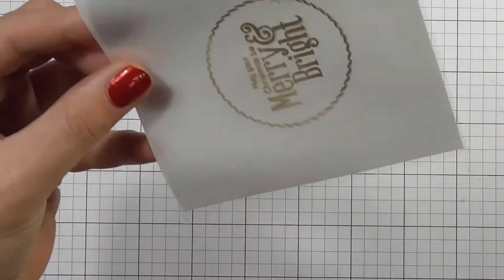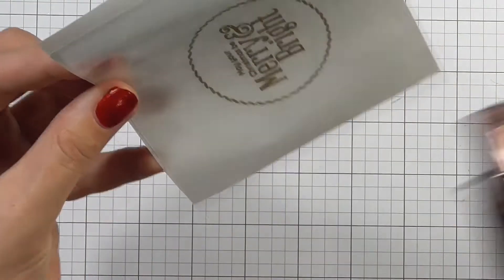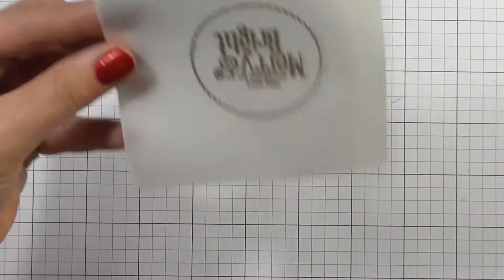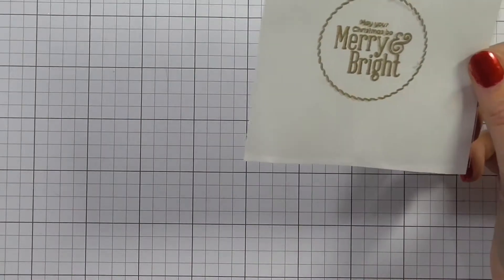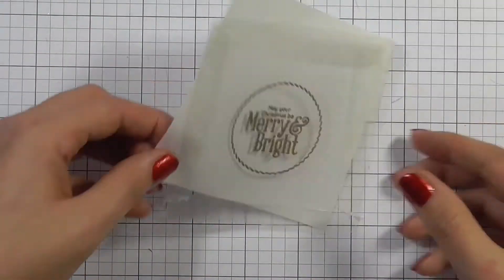So I'm just heat embossing that as normal. I'm only allowing the heat from the heat gun to be on the acetate for a couple of seconds at a time just to make sure that I don't get any warping, and you can see there that that's embossed perfectly with no warping whatsoever.